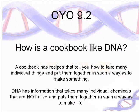In your book, you had On Your Own 9.2, which asked the question: How is a cookbook like DNA? A cookbook has recipes that tell you how to take many individual things and put them together in such a way as to make something tasty. Just like that, DNA is like a cookbook, because DNA has the information that takes many individual chemicals that aren't alive — things like proteins and carbs — and puts them together in such a way to make life.